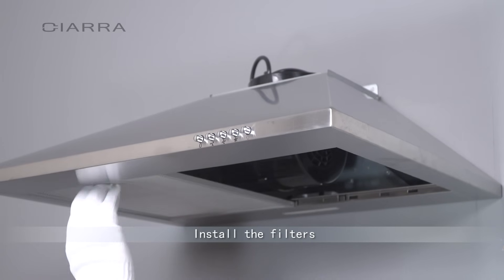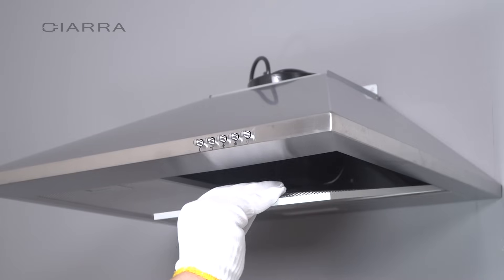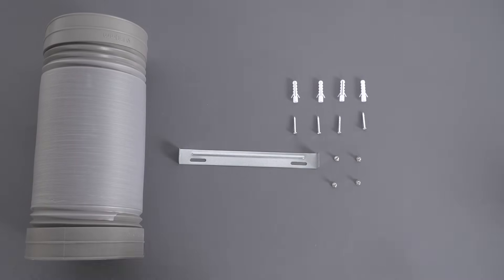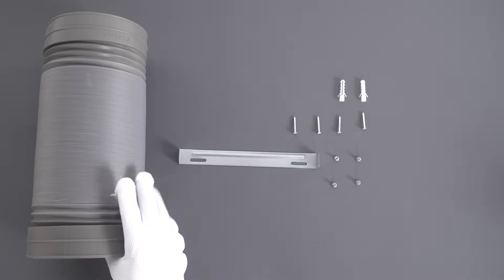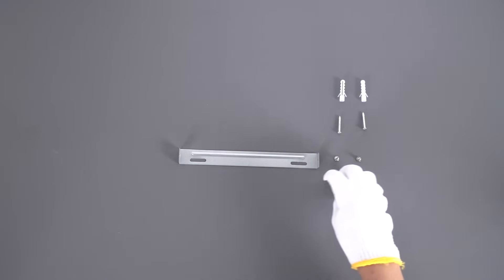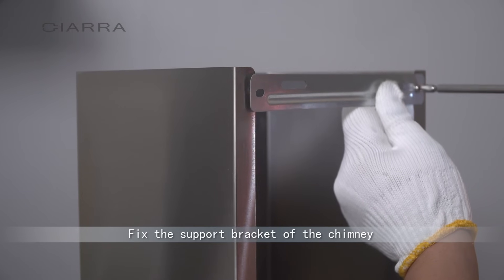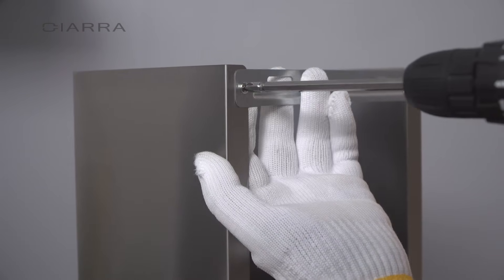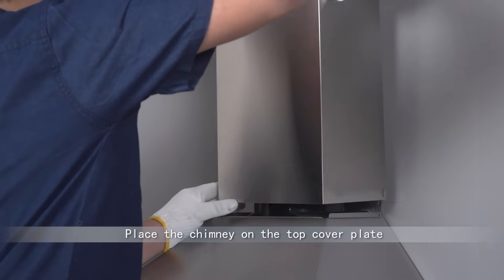Install the filter. Fix the support bracket of the chimney on the back of the chimney with screws. Place the chimney on the top cover plate.